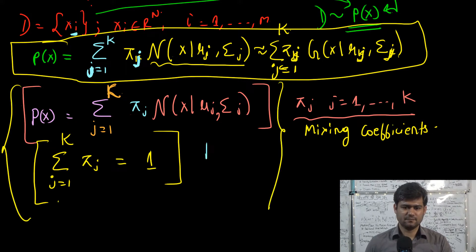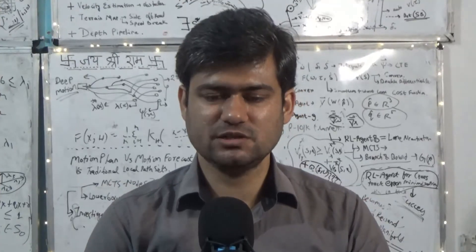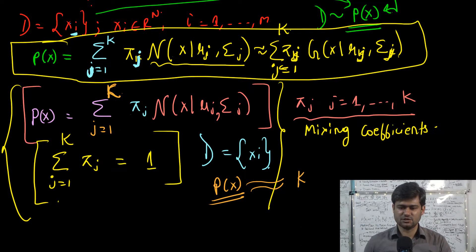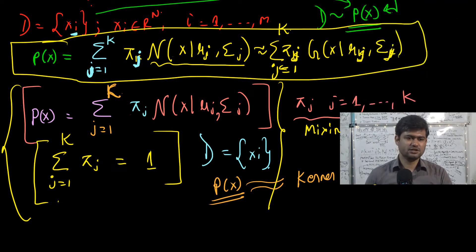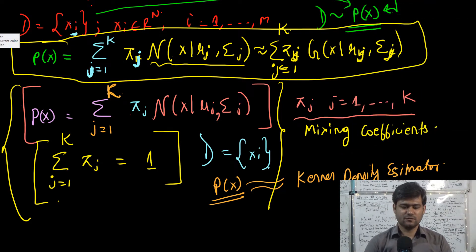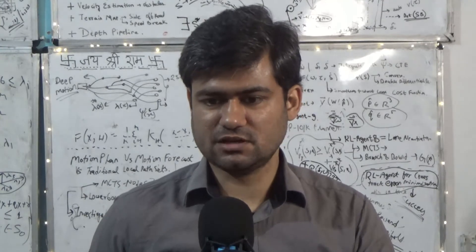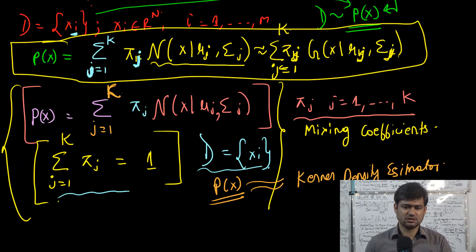Given a dataset D of m data points x_i generated from some underlying true probability density function p(x), we would like to approximate p(x). In the kernel density estimation lectures, we approximated this underlying true density function using a kernel density estimator. Here, under GMM, the machine learning literature provides another algorithm: rather than using a kernel density estimator, we approximate p(x) as a simple linear superposition of Gaussian components with the constraint that the mixing coefficients sum to 1.